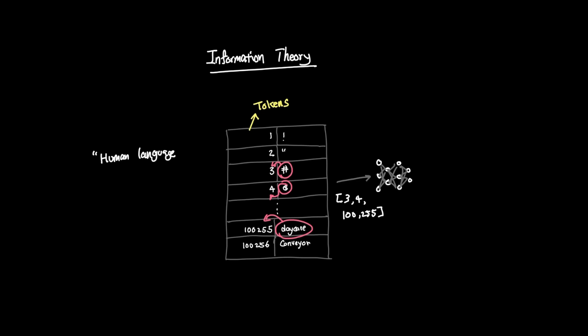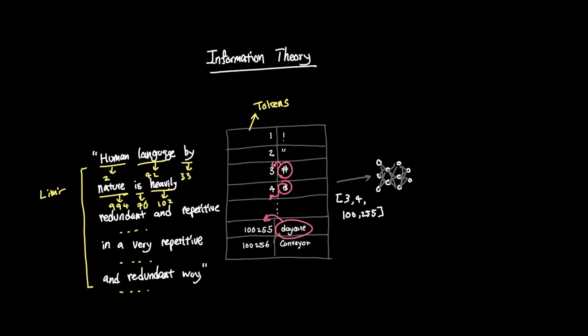But human language by nature is heavily redundant and repetitive in a very repetitive and redundant way. And since tokens need to be generated for each word that we give as input, there's a limit to how much information we can cram in without losing the very information that it represents.